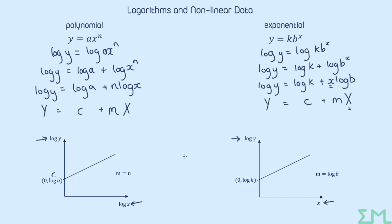You've also got the difference in the gradients. For a polynomial, the gradient linked straight back to one of the parameters in the original model. But for exponential, the gradient is actually log of one of the parameters in the original model. So you really do have to be very clear which one you are looking at. We're going to have a look at a couple of examples now so that we can see how the exam board is going to test your knowledge on this.